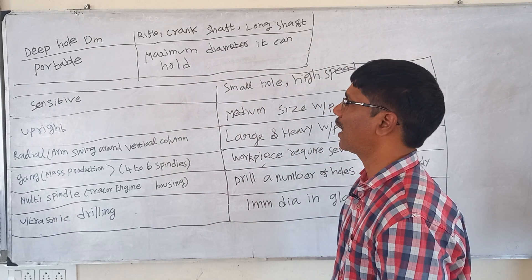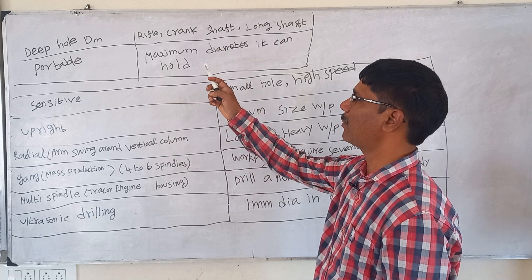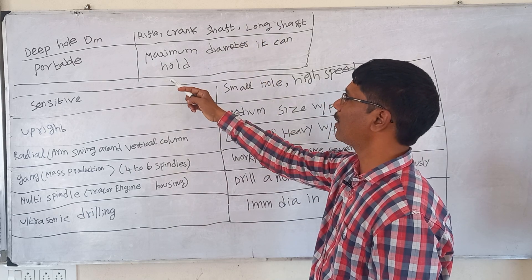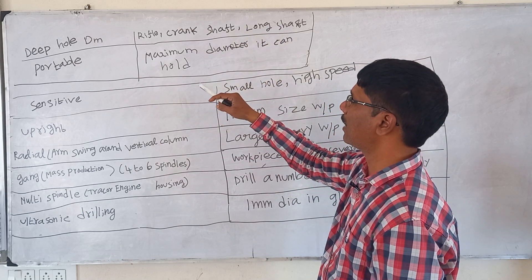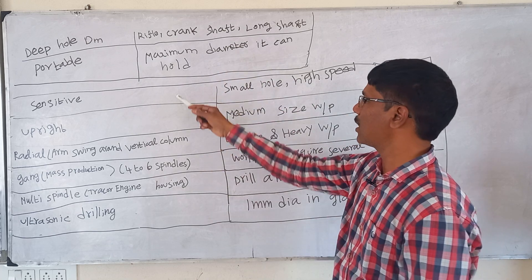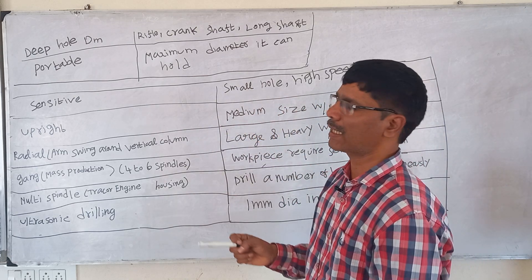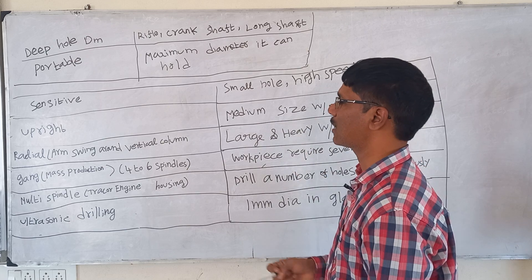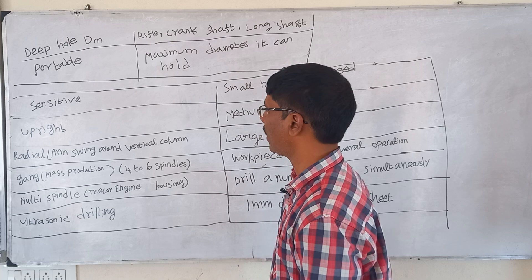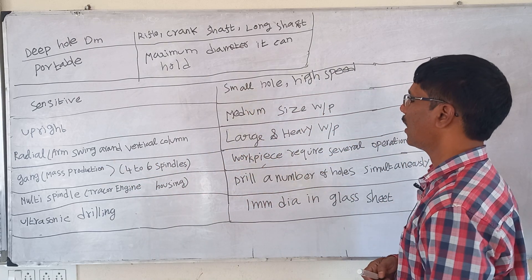Types of drilling machines include the deep hole drilling machine, which is used to make rifle barrels, crankshafts, and long shafts. The portable drilling machine is specified by the maximum diameter it can drill. A sensitive drilling machine is used only for small holes at high speed. An upright drilling machine is useful for medium-size workpieces. The radial drilling machine, commonly seen in workshops, has an arm that swings around a vertical column and is used for large and heavy workpieces.